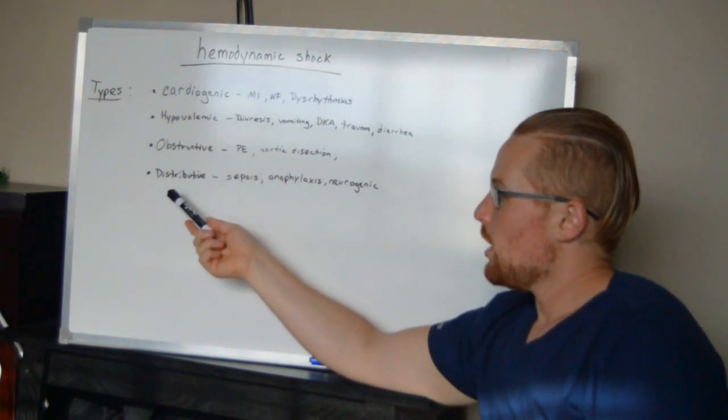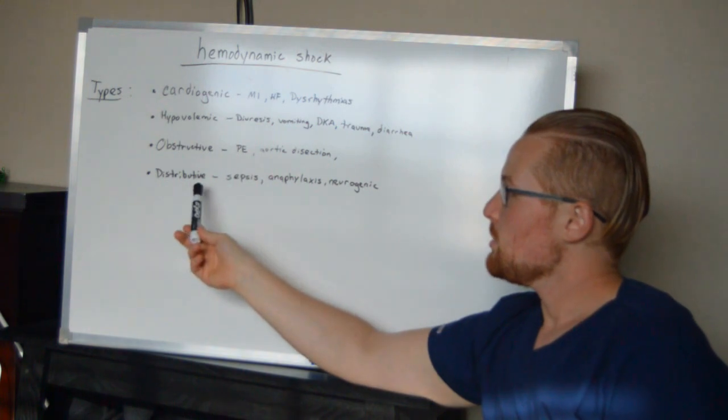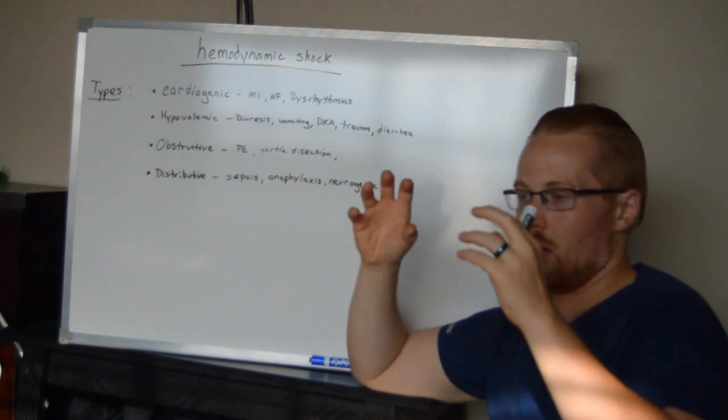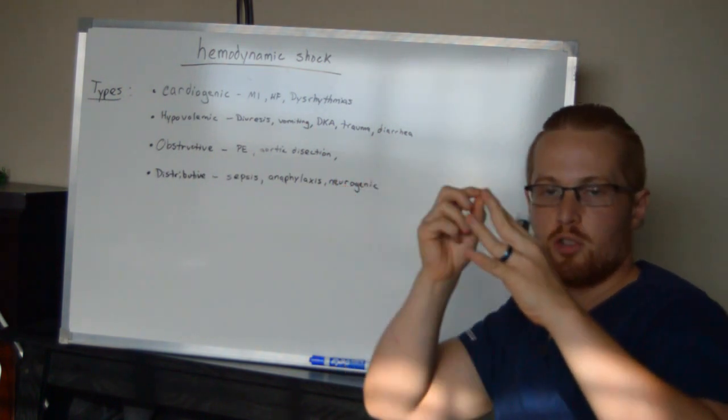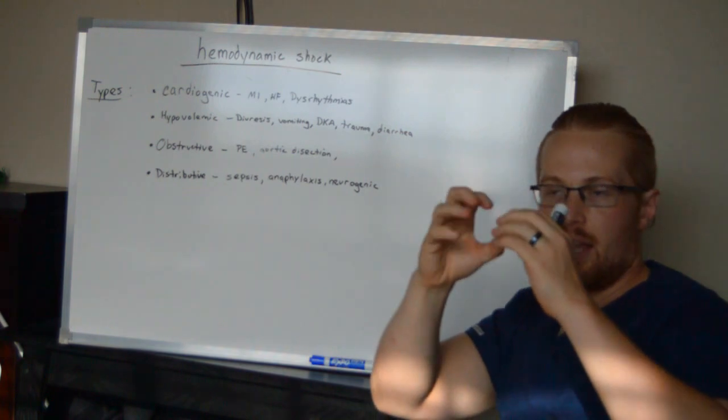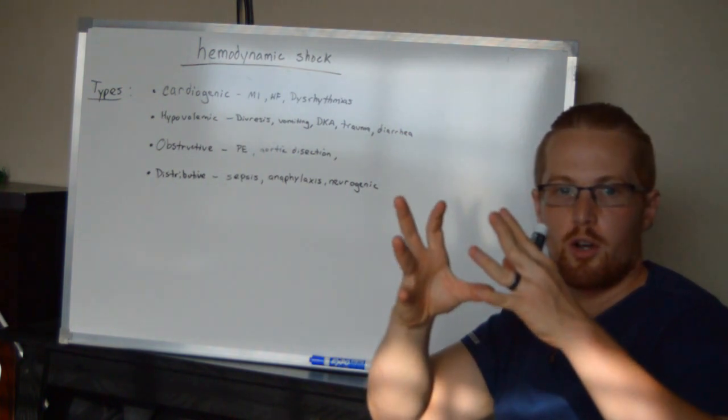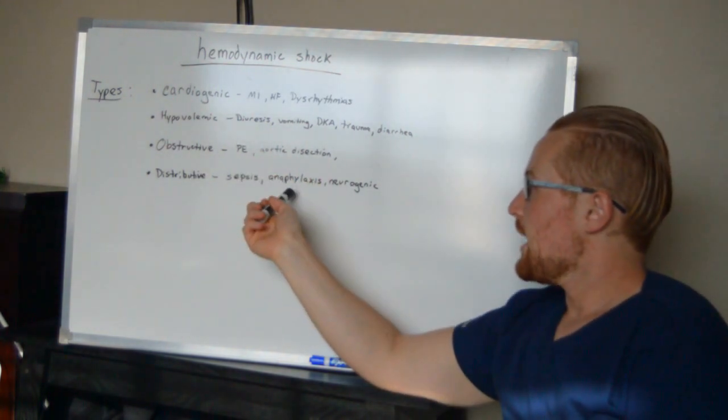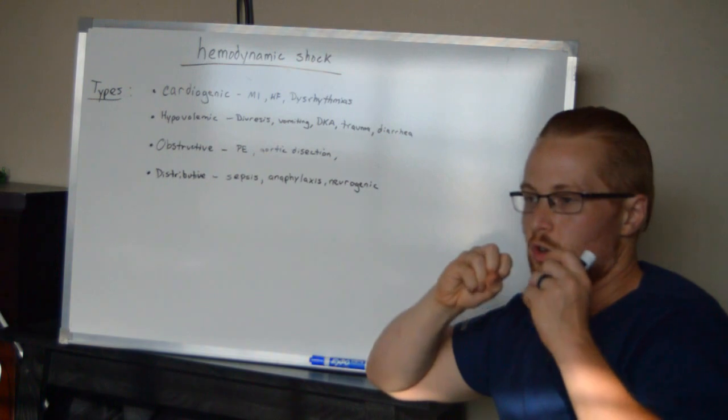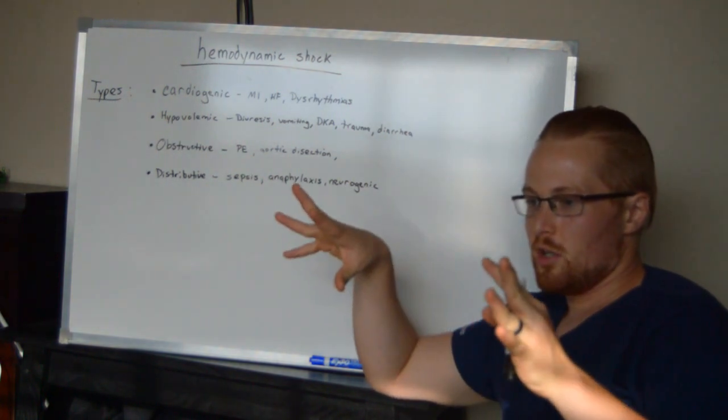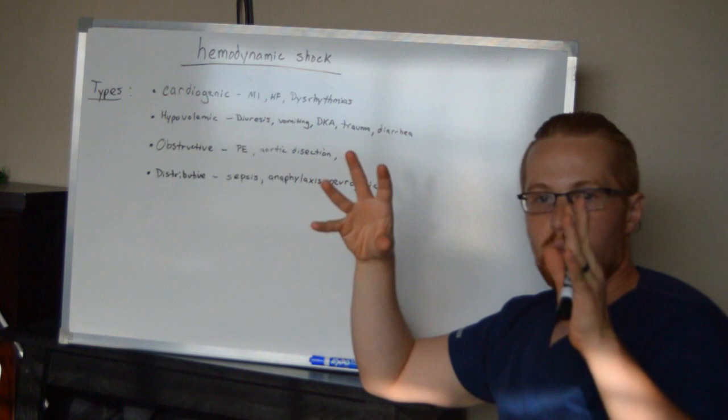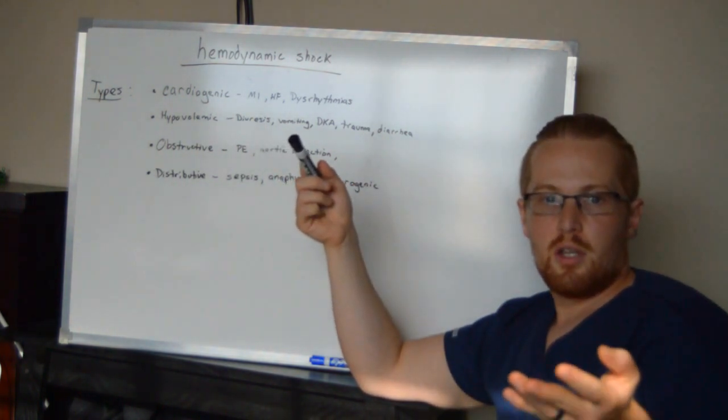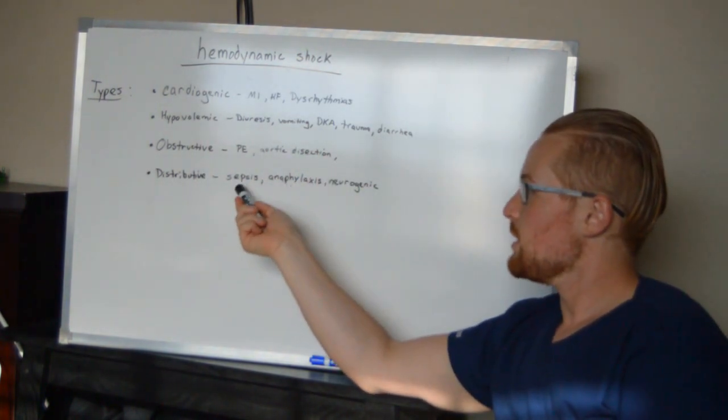And the last type or category is distributive. And what this means is all the blood vessels have lost their tightness and they've all just opened up wide open. So the blood that's going through there doesn't put very much pressure anymore because the vessels are wide open and so there's less pressure because it's just wide open. So, for example, anaphylaxis. There are so many hormones going through the body that are inflaming all the blood vessels so wide open that the blood pressure just drops because there's no more tone to the vessels.